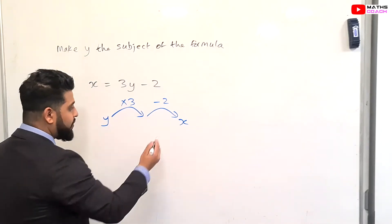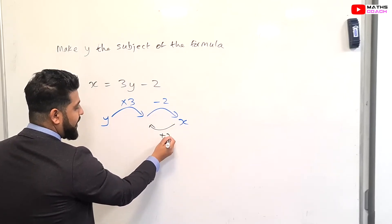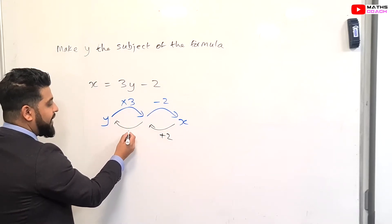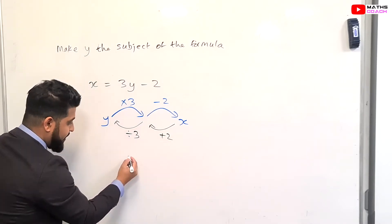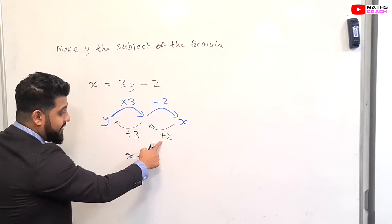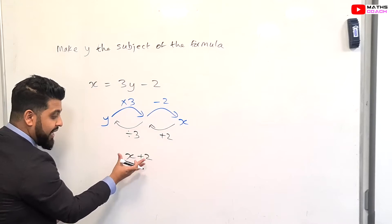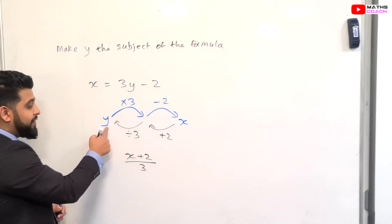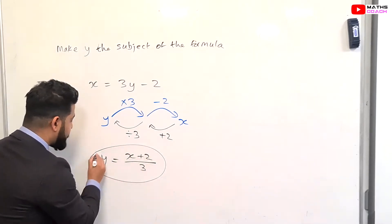Now if we work backwards: instead of minus 2, going backwards would be to add 2. Instead of times by 3, going backwards would be to divide by 3. So we get x plus 2, then divide the whole thing by 3, and that gives us y. So y equals x plus 2 all over 3. This is a very straightforward method.